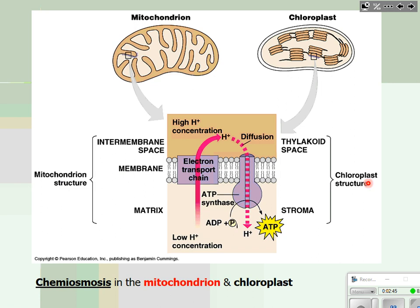That proton gradient drives the facilitated diffusion of protons through ATP synthase, causing a rotor to spin. Every time that rotor spins, an ADP is phosphorylated to make ATP. In both the mitochondria and the chloroplast, it is an electron transport chain — the flow of high-energy electrons moving from protein to protein — that pushes the protons into the compartment where they get trapped.